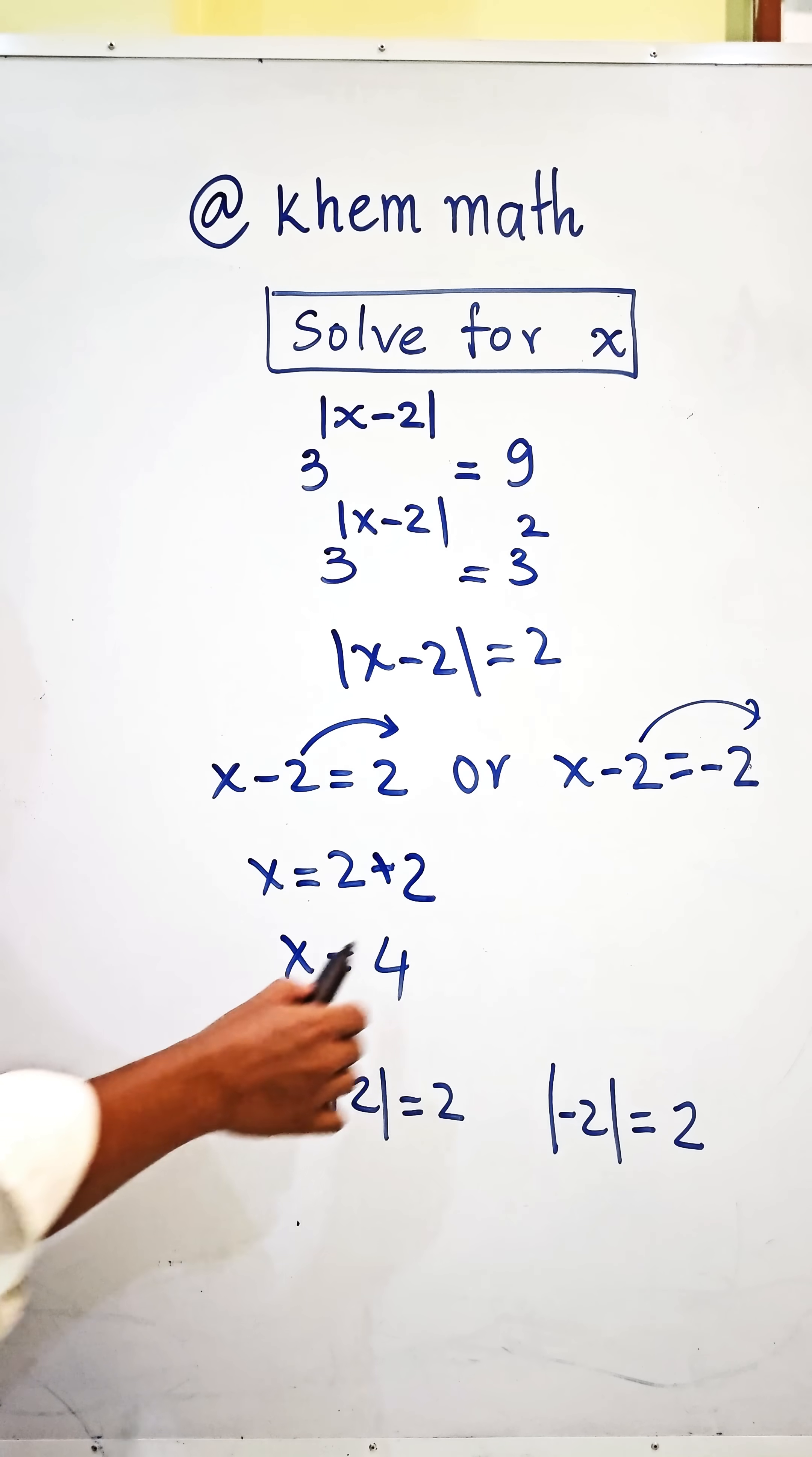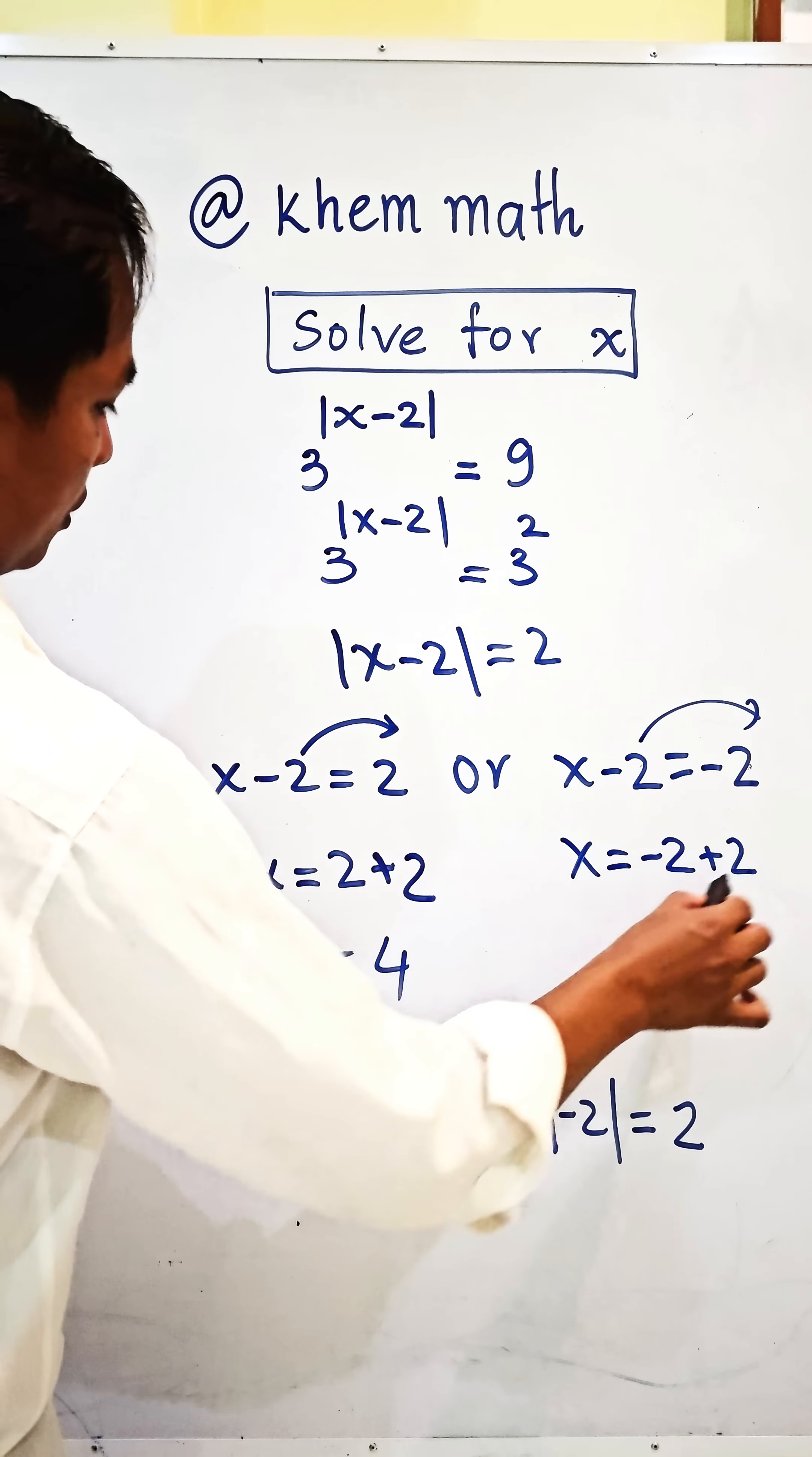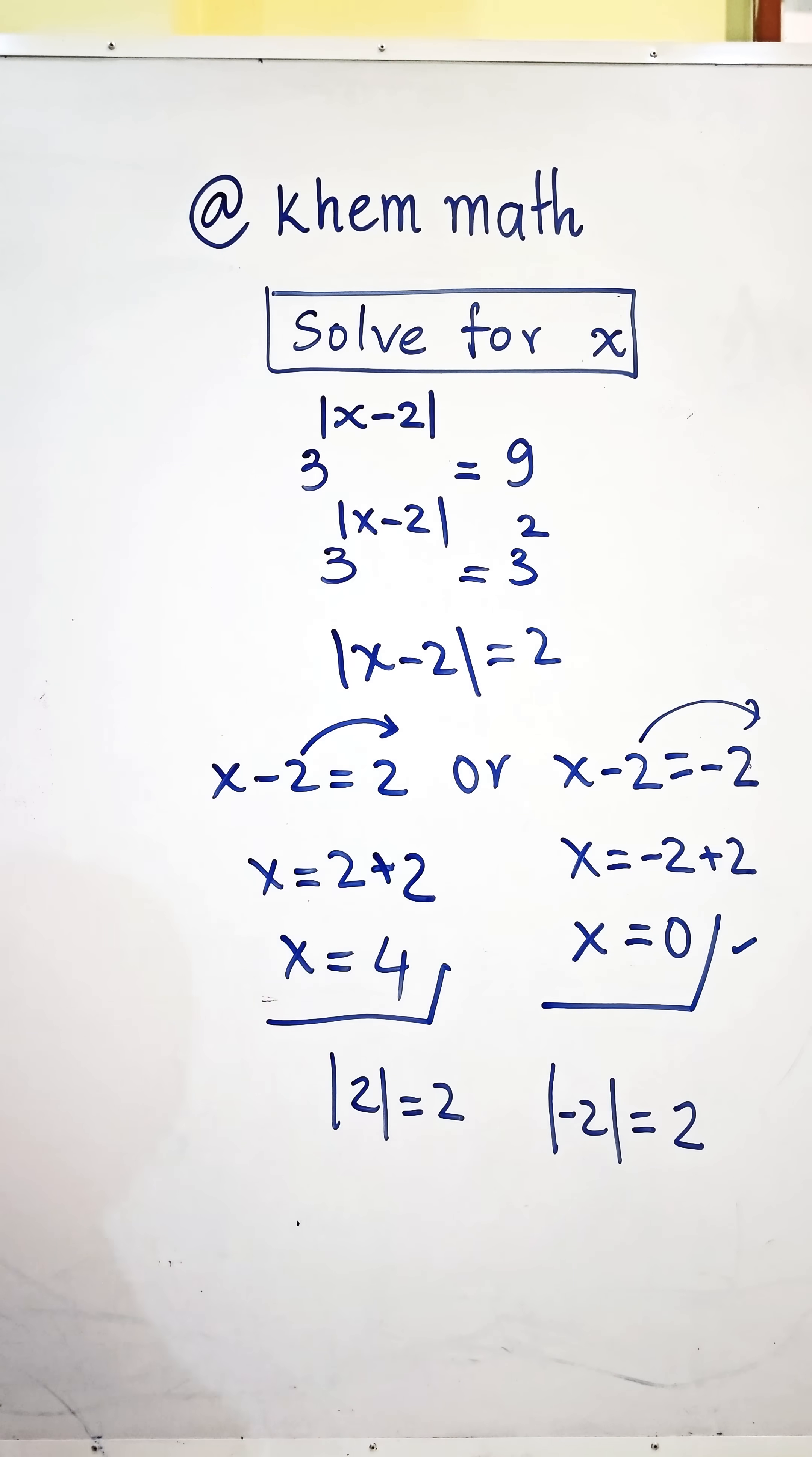We get x equals negative 2 plus 2, and we get x equals 0. Now we have the values of x equal 4 and x equal 0 as our answer.